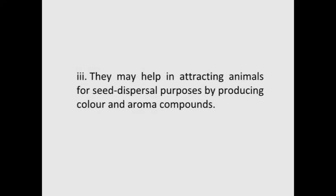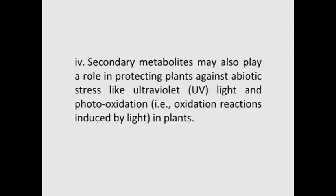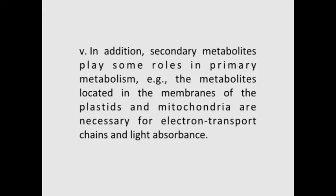Thirdly, they may help in attracting animals for seed dispersal purposes by producing color and aroma compounds. The fourth function is that secondary metabolites may also play a role in protecting plants against abiotic stress like ultraviolet or UV light and photo-oxidation, that is oxidation reactions induced by light in plants. In addition, secondary metabolites play some roles in primary metabolism; for example, the metabolites located in the membranes of the plastids and mitochondria are necessary for electron transport chains and light absorbance.